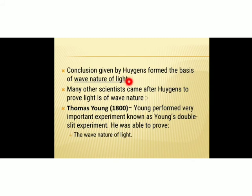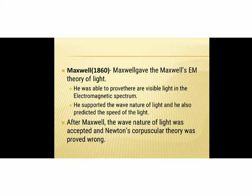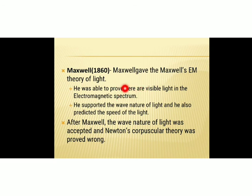Many other scientists came after Huygens to prove light is of wave nature. One among them was Thomas Young, who performed a very important experiment known as Young's double slit experiment and was able to prove the wave nature of light — we will discuss this in our coming sessions. Then Maxwell in 1860 gave the Maxwell's electromagnetic theory of light. He proved that visible light is part of the electromagnetic spectrum, supported the wave nature of light, and also predicted the speed of light. After Maxwell, the wave nature of light was accepted and Newton's corpuscular theory was proved wrong.